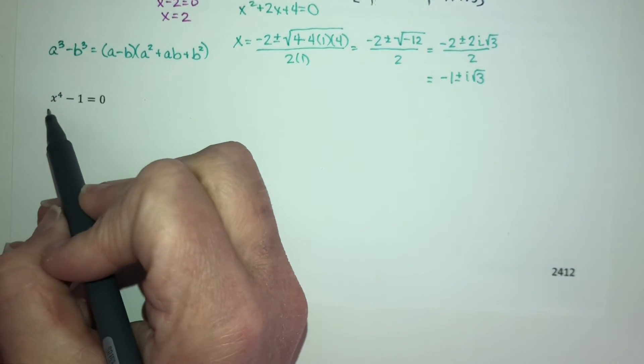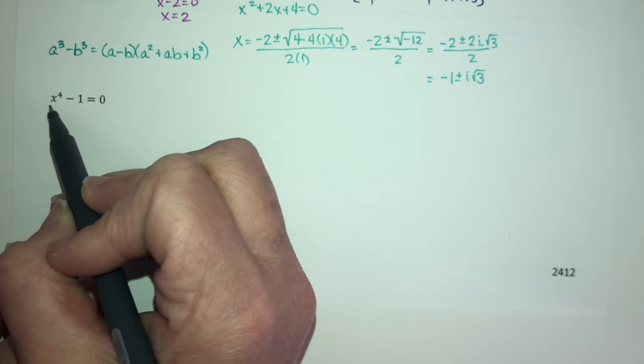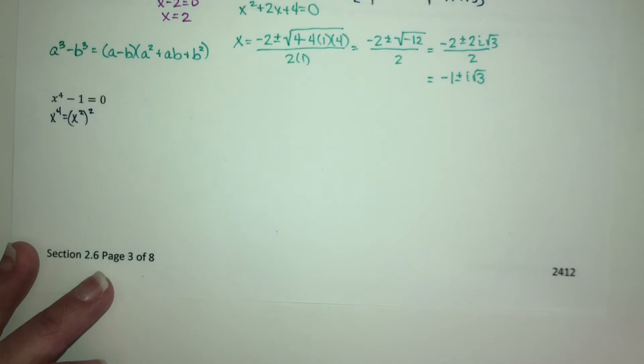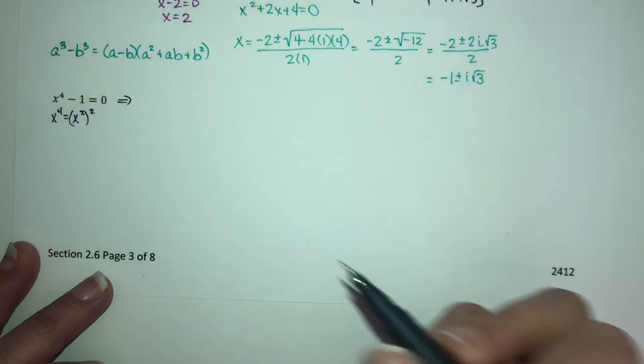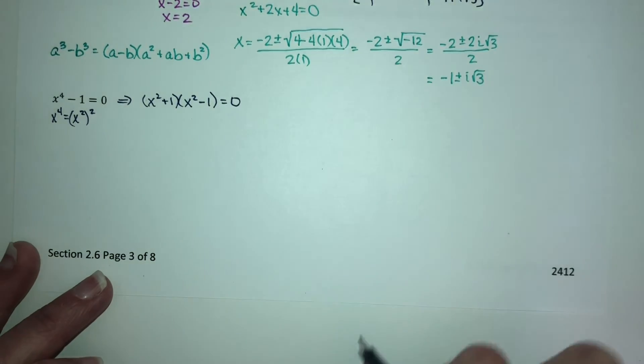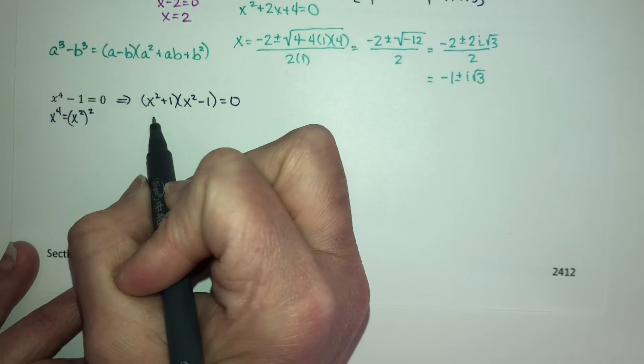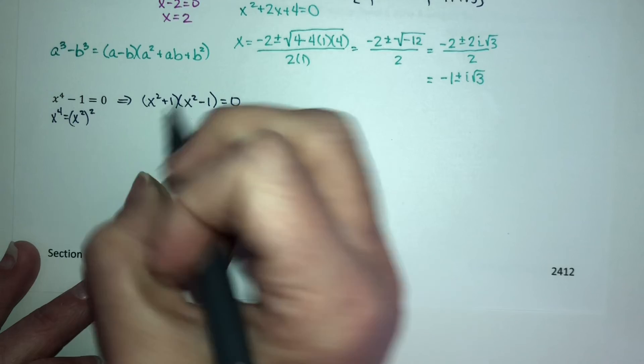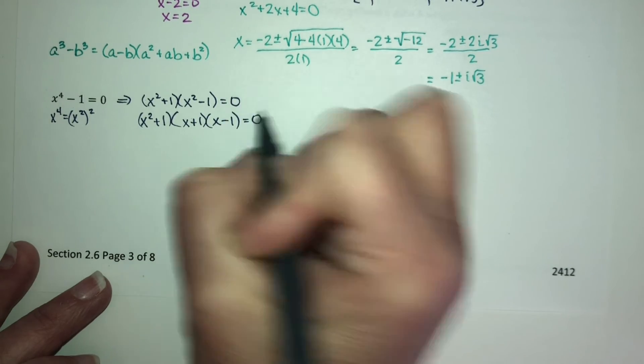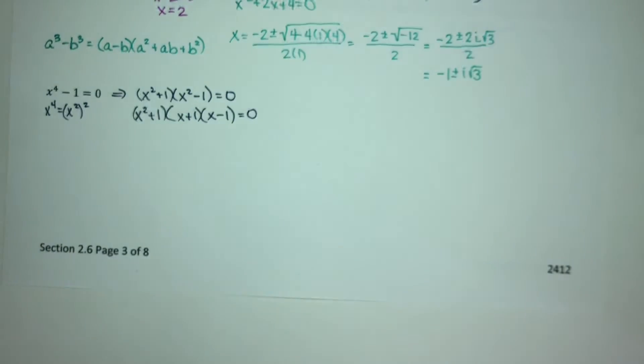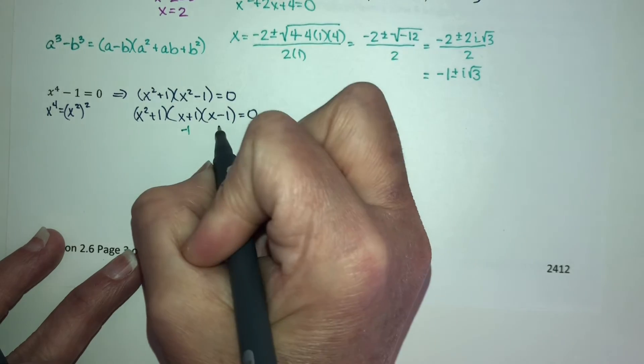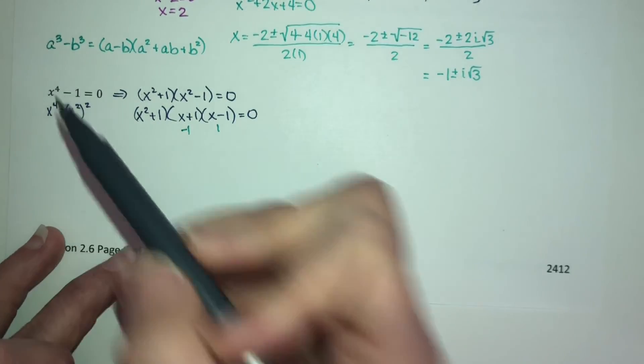Now let's do this one. x to the 4th minus 1 is equal to 0. This is a difference of squares because x to the 4th is the same thing as x squared squared. So I can factor x to the 4th minus 1 as x squared plus 1, x squared minus 1 equal to 0. x squared plus 1 does not factor any further, but x squared minus 1 does. Now I should set each of these equal to 0. These two are easy. If I set this one equal to 0, I'm going to get negative 1. If I set this one equal to 0 and solve, I get positive 1. So those are two of my four solutions that I expect to get.